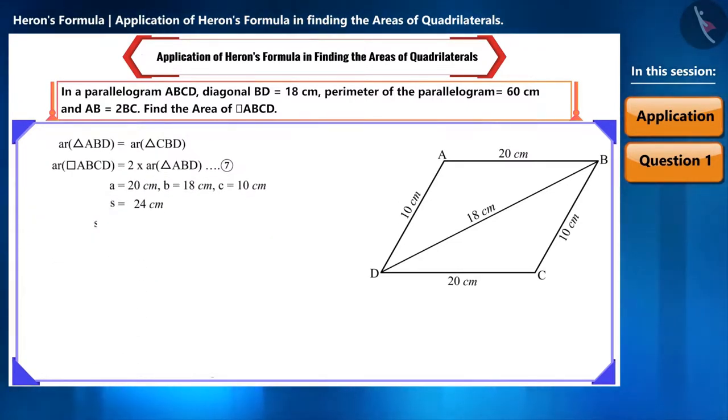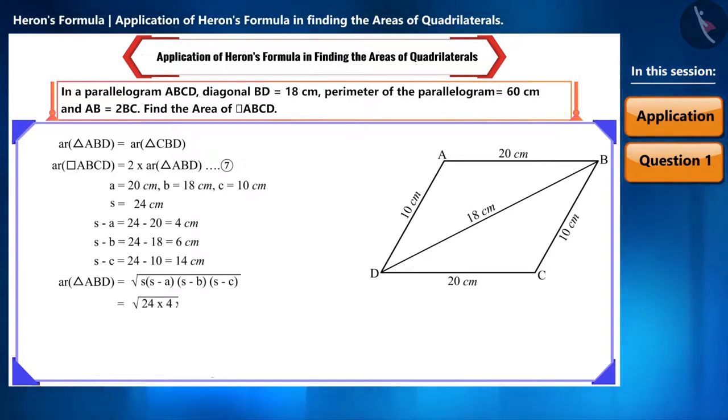Now we will find the value of S minus A, S minus B, and S minus C. We can write the area of triangle ABD in this way and substitute it in the formula. Here, instead of finding the product of these numbers, we will find their factors. In this way, the area of triangle ABD will be 24 root 14 square cm.